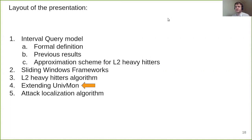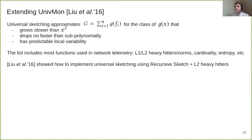Now we move to the extension of universal sketching or Univmon. Univmon sketching approximates function capital G, which is a sum over frequency, a function over frequencies G over FI, where FI is a frequency of ith item. But only for the class of functions Gx that grow slower than x squared, basically sub L2, drop no faster than sub polynomially and have some predictable local variability. The list includes most functions using telemetry: L1, L2 heavy hitters, norms, cardinality, entropy, distinct counts, and so on.